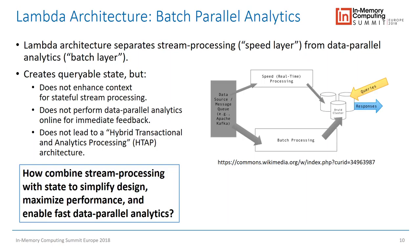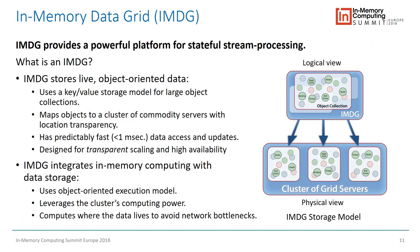So how do you combine stream processing and data parallel analytics with a simple design and high performance in one architecture? That's where the digital twin model adds value, which we'll get to once we talk about in-memory data grids. Slides will be available afterwards, and I'm happy to email them to anyone who asks.